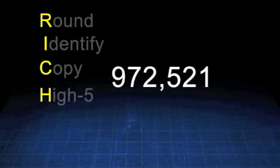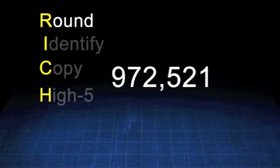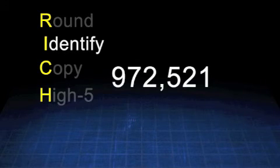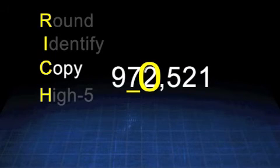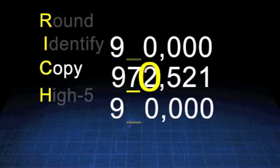Let's try another number. 972,521 is the number. This time we are asked to round to the nearest 10,000. We know we have to round, which is the first step. Next, we have to identify the 10,000's number, which is the 7, and circle the number to the right. Next, we have to copy the number above and below. The numbers to the right of the underlined value turn into zeros, and the numbers to the left stay the same. The number below the underlined number stays the same, and the number above goes up by 1.